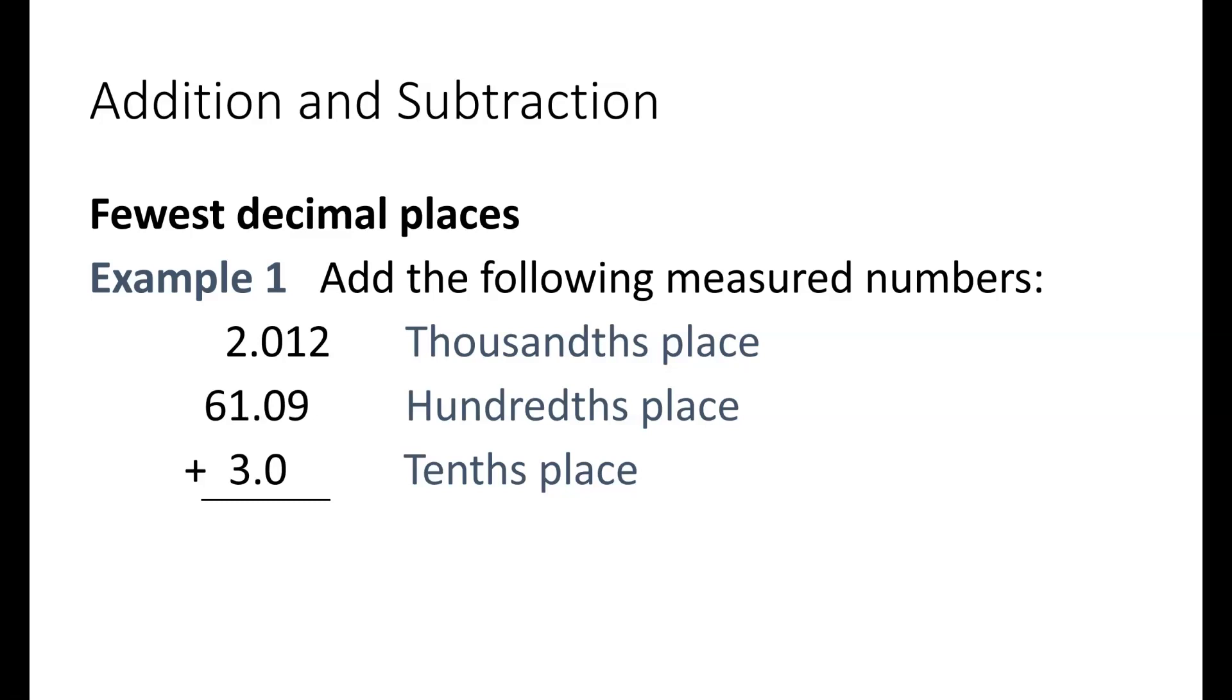In this example, I'm adding 2.012, 61.09, and 3.0. The first number goes to the thousandths place, the second number goes to the hundredths place, and the last number is to the tenths place. Notice that they've been all organized so that the decimal place is lined up.